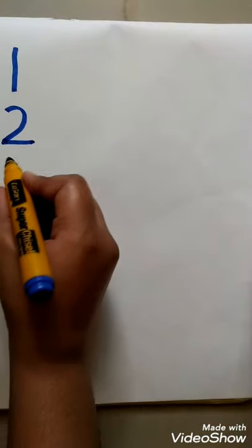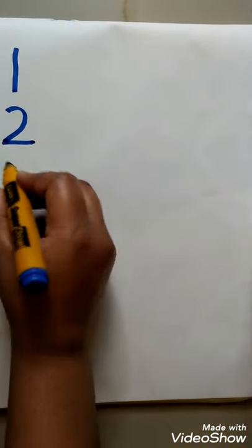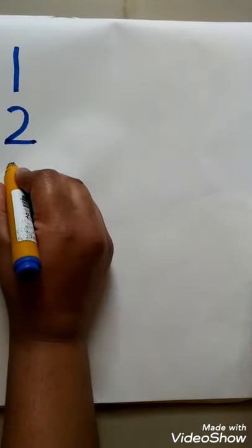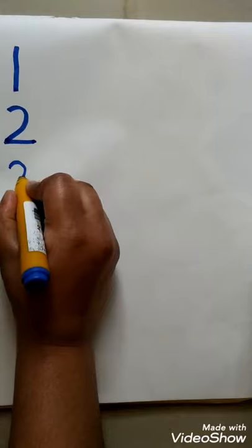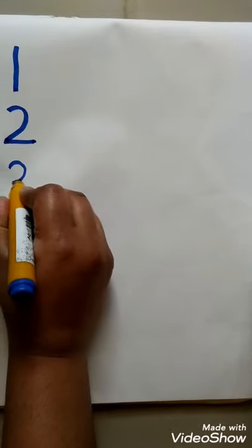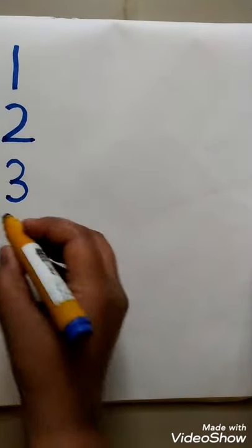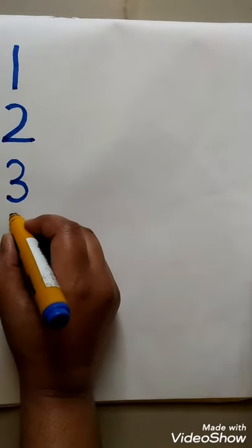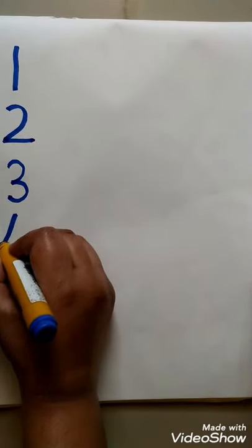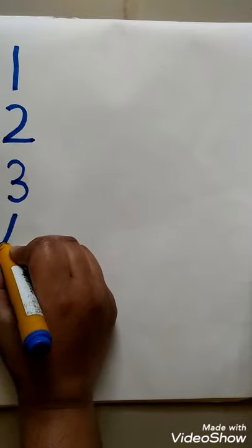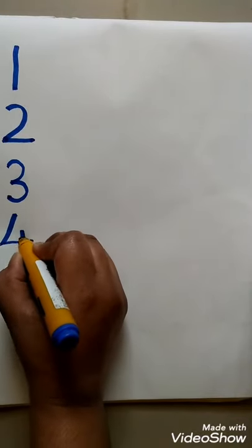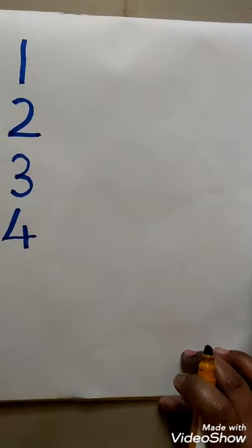Then number 3 — yes, we have done. So 1 curve forward, 2 curve forward: number 3. Then 1, 2, 3, 4 also we have done. So slanting line backward, sleeping line and a standing line is number 4.